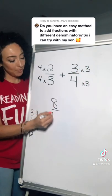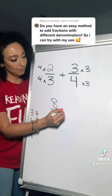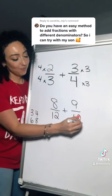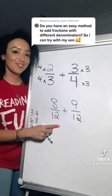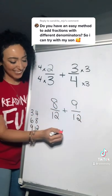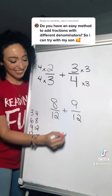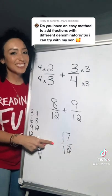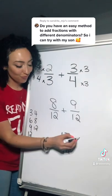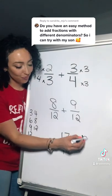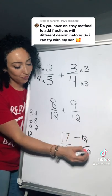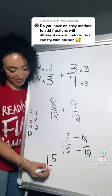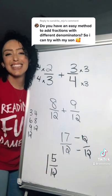Rewrite it and add it up. Yep, 17/12, which is improper. So let's subtract one whole, which could also be written as 12/12, leaving you with 1 and 5/12.